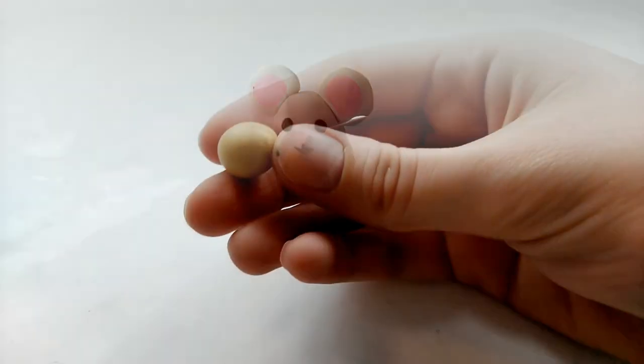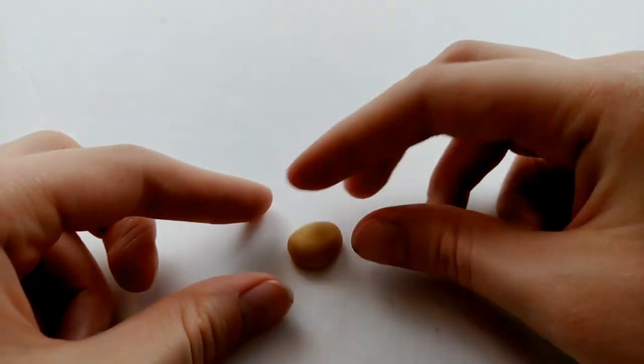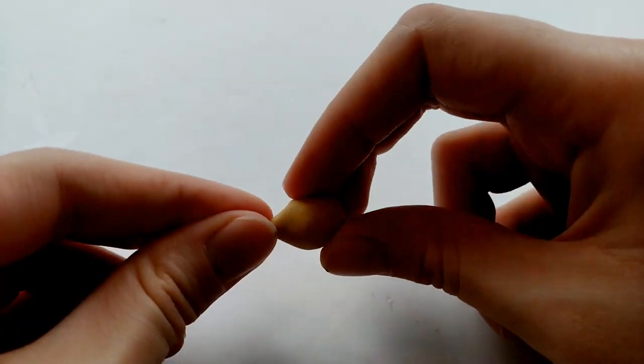Next we're going to take a ball of light brown clay and kind of squish it down into a teardrop shape. And this is going to be the body of our hedgehog.